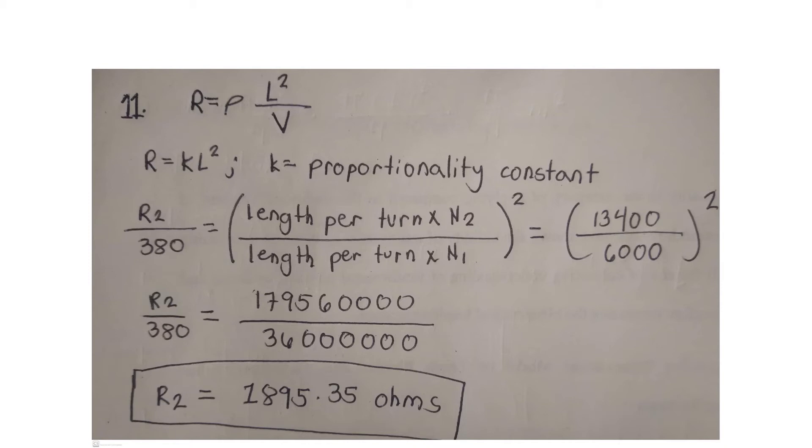We will substitute the given value to our formula, which is R2 over R1 multiplied by the length per turn of number 2 and length per turn of number 1, then square it.